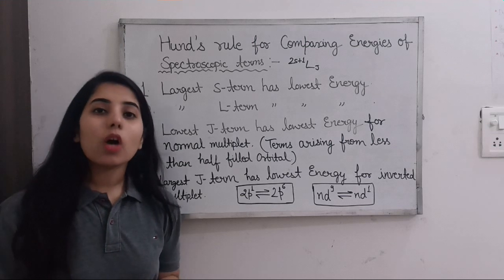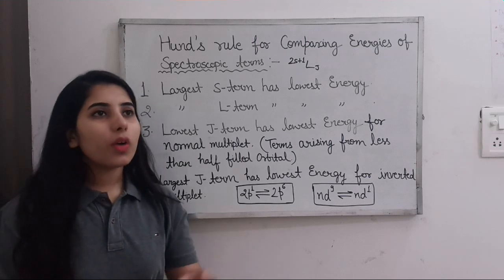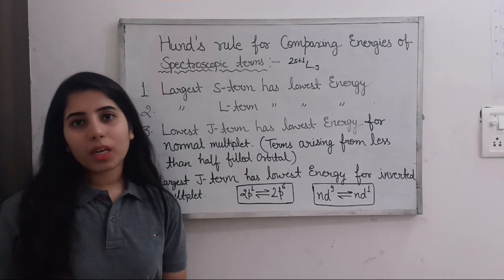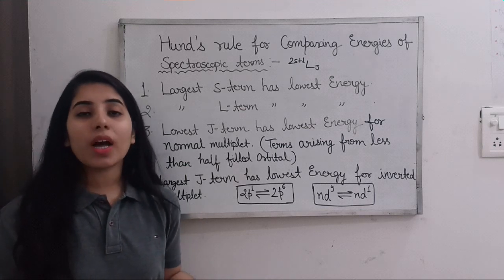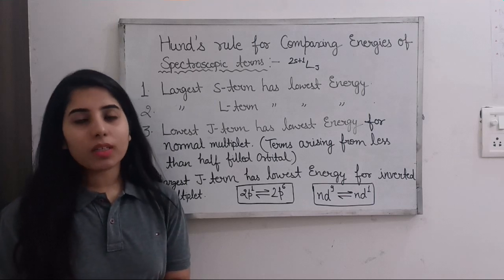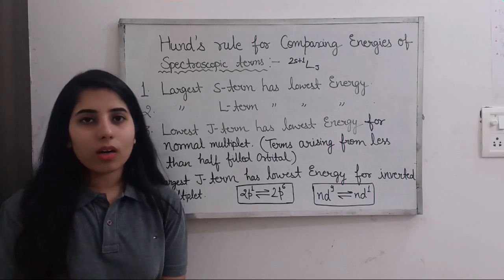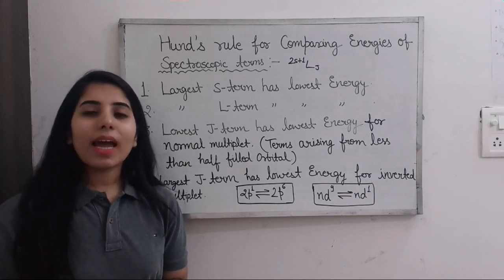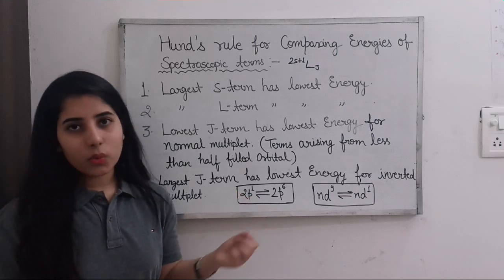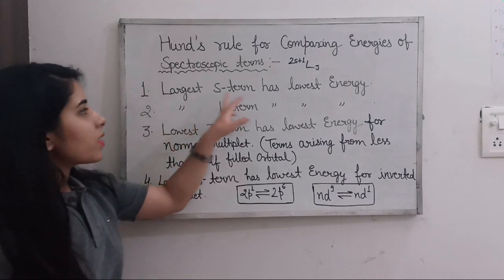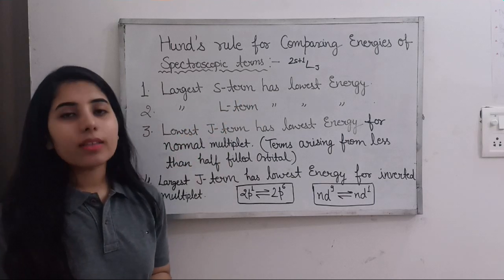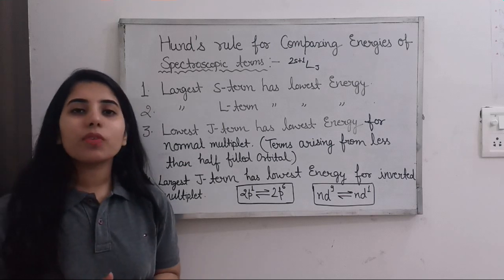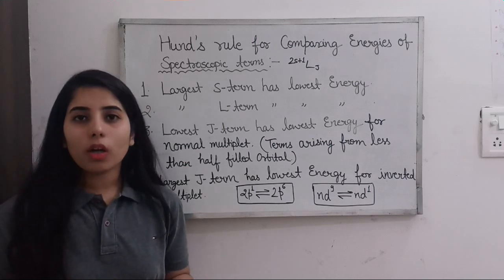The first rule is: the largest S term has the lowest energy. When you are given an element or spectroscopic terms directly in a question and are asked to arrange them in increasing or decreasing order of energy, you will require these rules. So the largest multiplicity (2S+1) corresponds to the lowest energy.